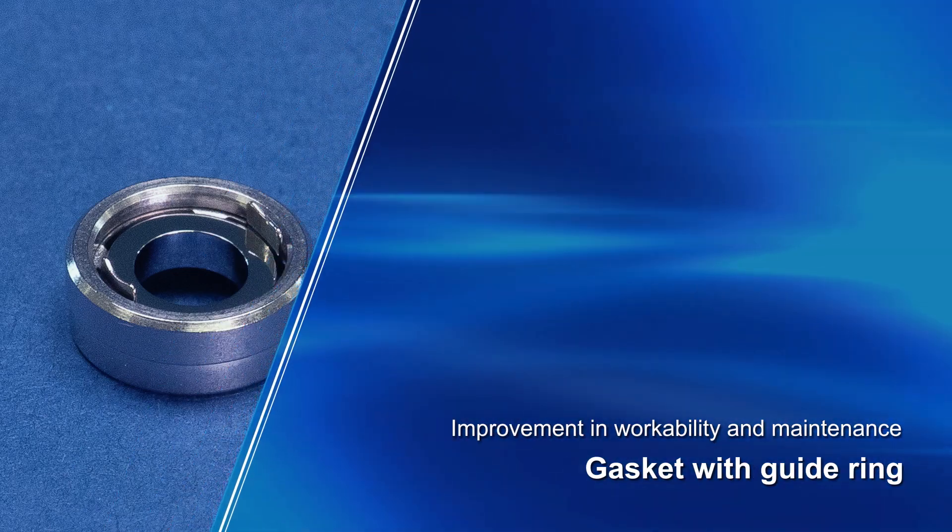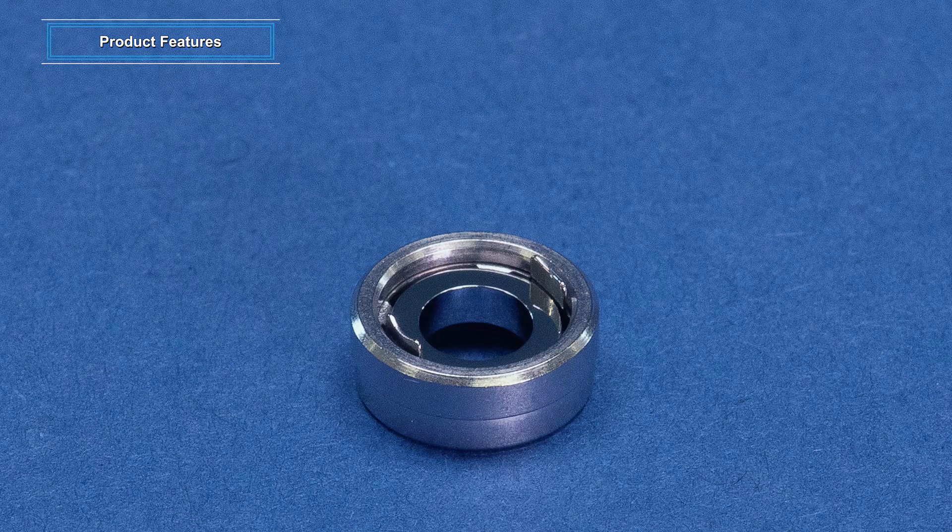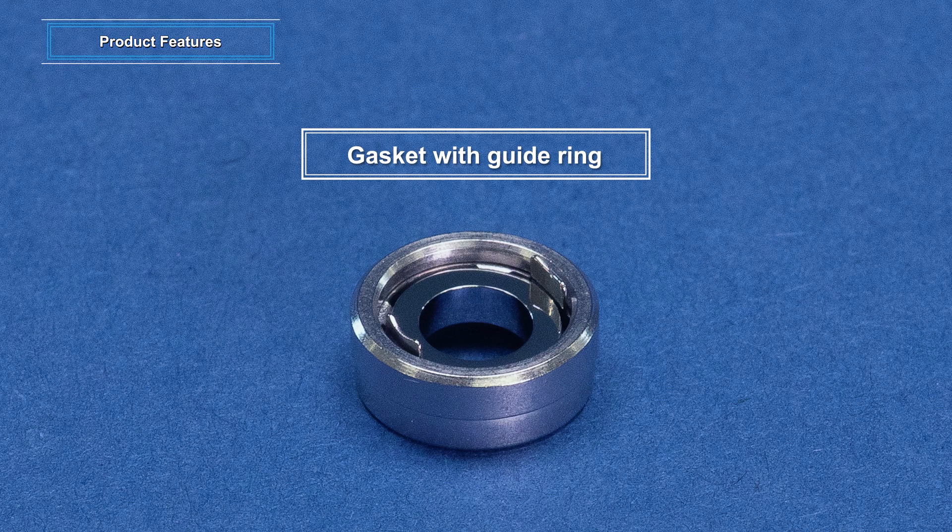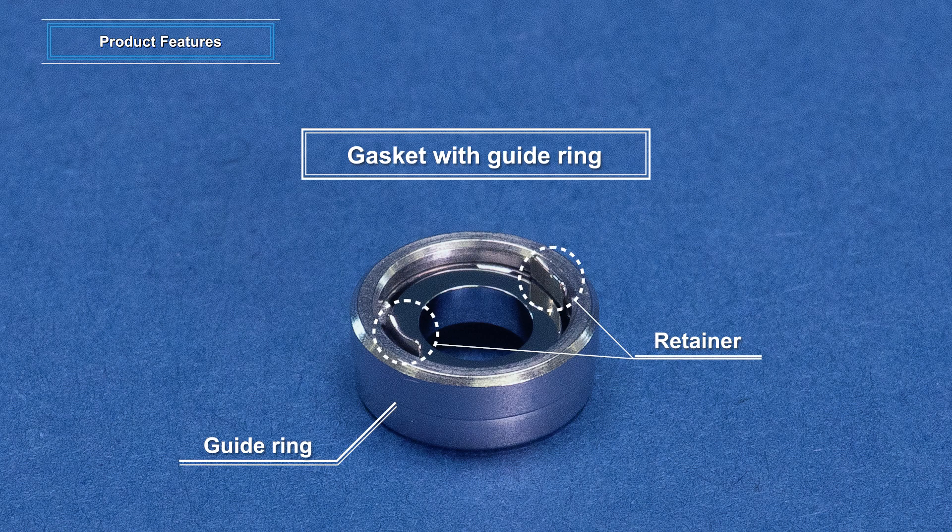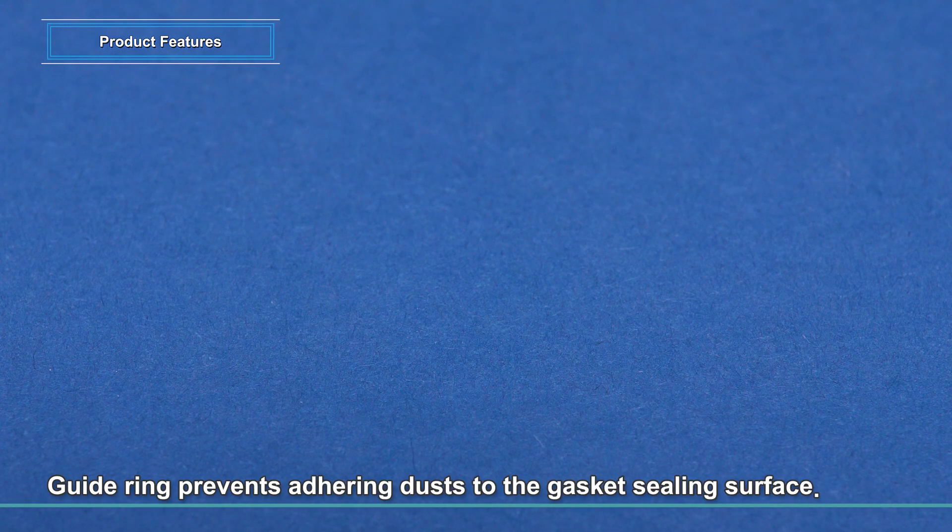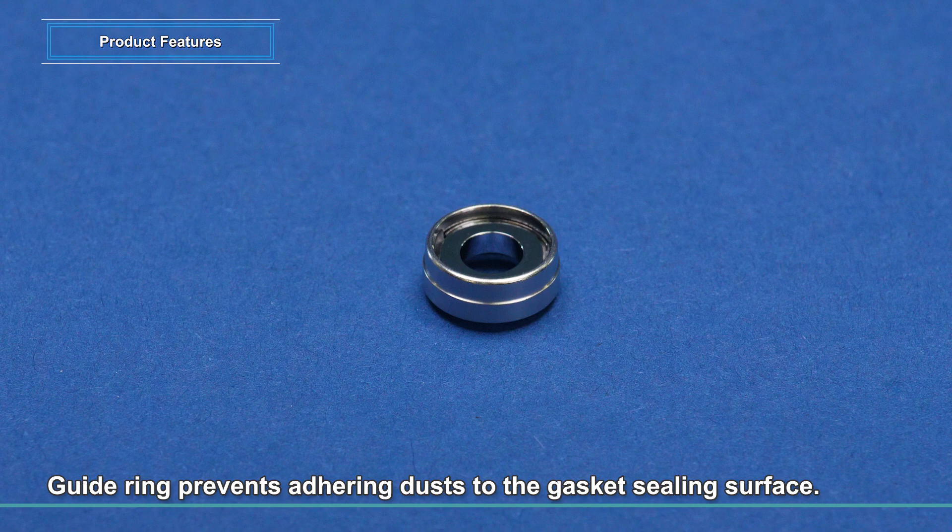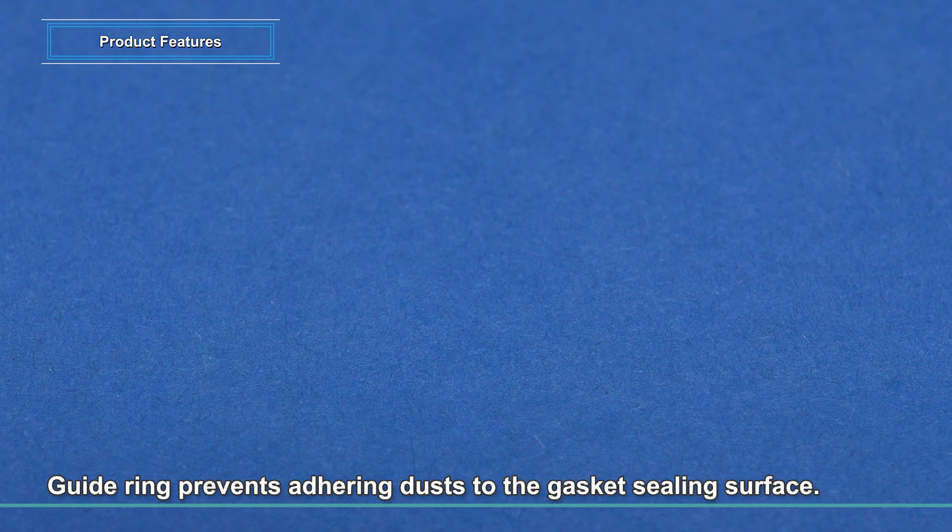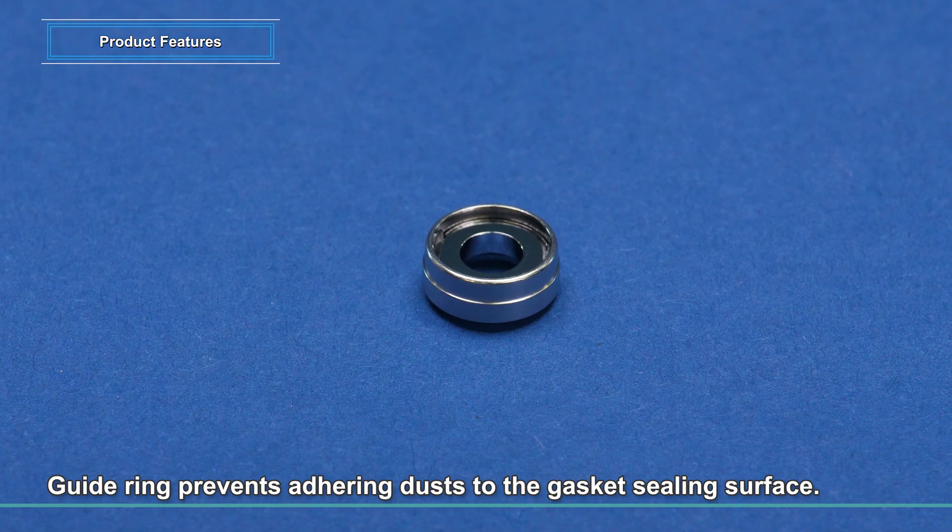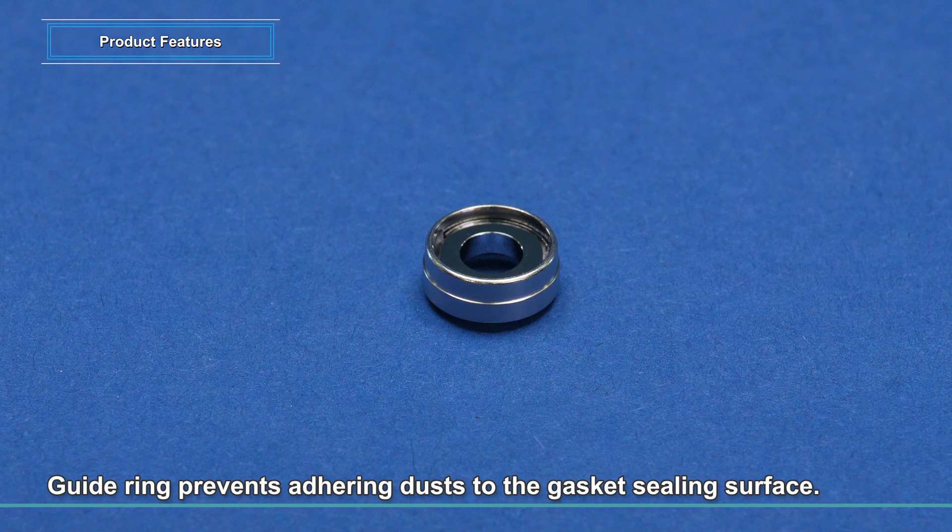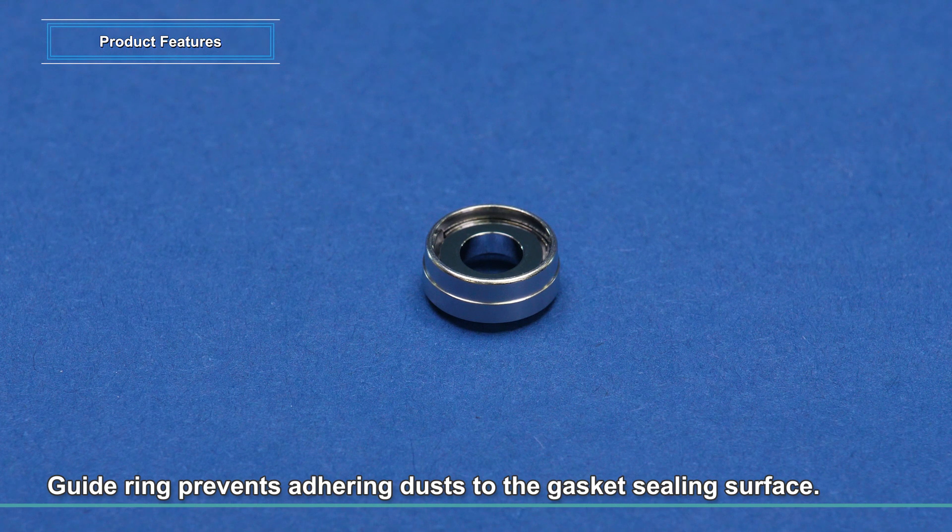Gasket with a guide ring: IGS adopts a guide ring fitted gasket, therefore simply fitting a gasket makes alignment possible. And even when the gasket drops on the ground, the guide ring will first contact the ground without the gasket surface being contacted, thus providing a structure that makes it difficult for foreign matter to attach on the seal surface.